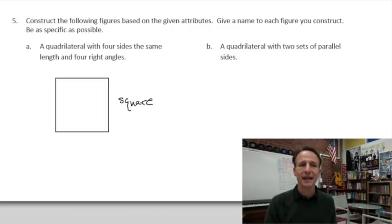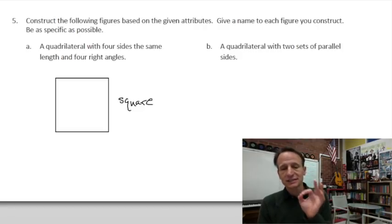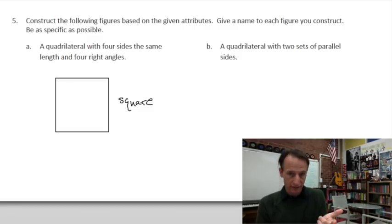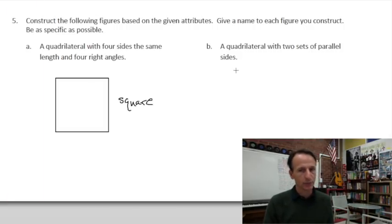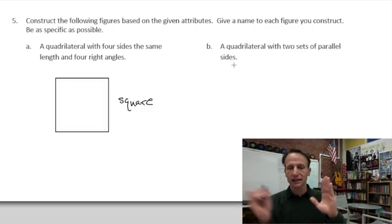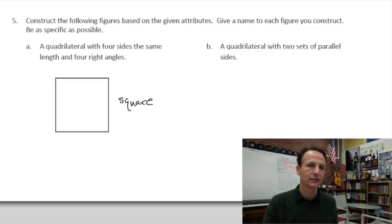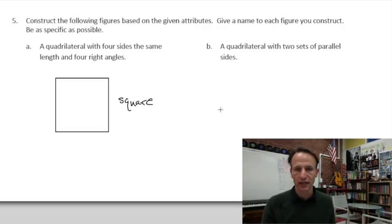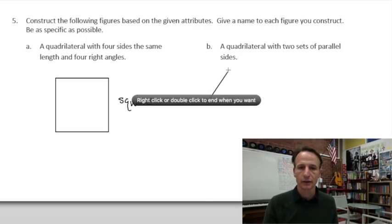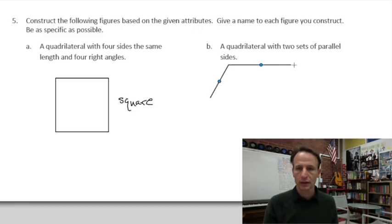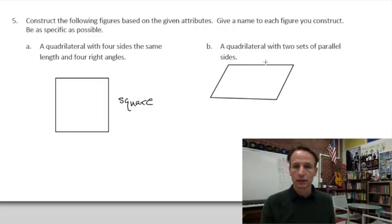Alright. So now we have a quadrilateral with two sets of parallel sides. Two sets of parallel sides. Now, because it says nothing about the angles, the most specific we can be is to say that this is a parallelogram, right? That we have two sets of parallel sides. So we have to assume it does not have right angles simply because it doesn't say so. So this is going to be a little bit more challenging for me to do freehand. So bear with me.